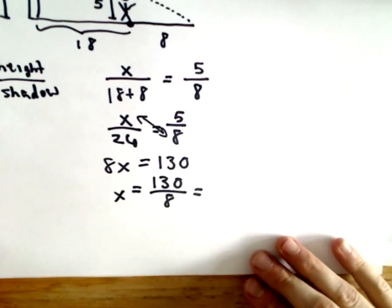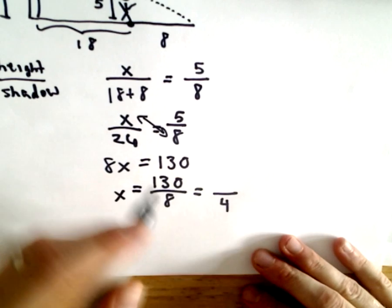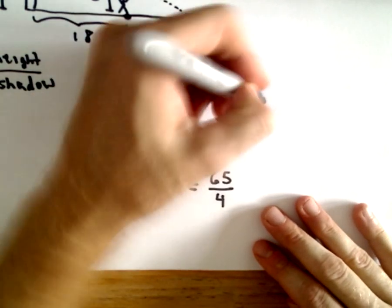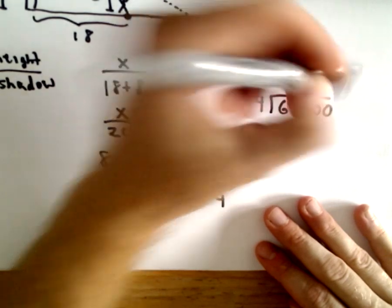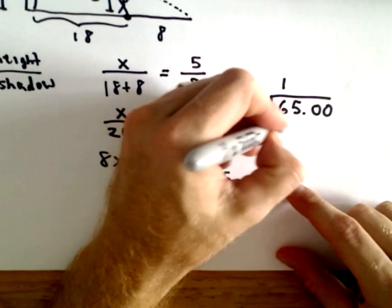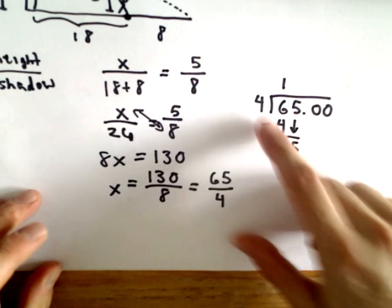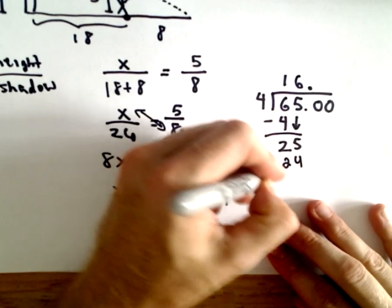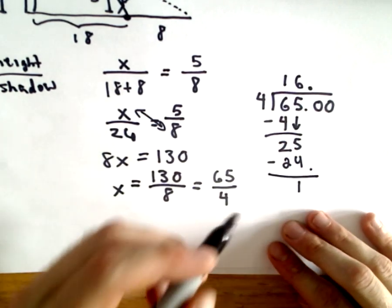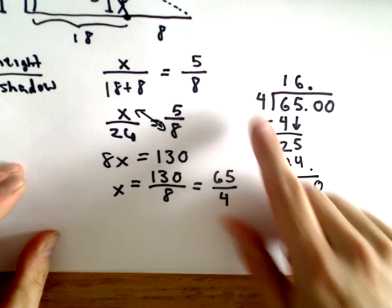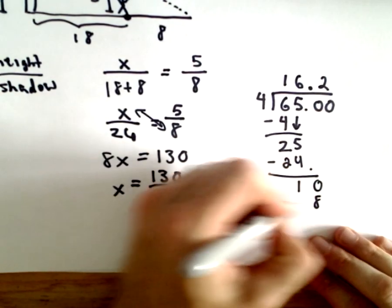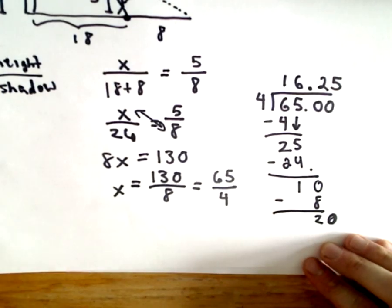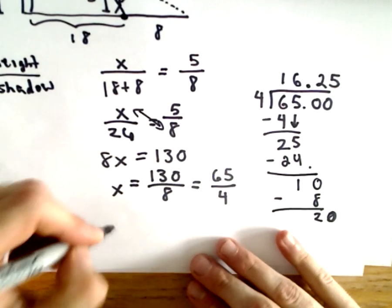If we divide both sides by 8, we'll get 130 over 8. Both of these are even, so let's reduce. 8 divided by 2 will be 4. 130 divided by 2, I think that'll be 65. Let's do some long division. 4 will go into 6 once. 1 times 4 is 4. If we subtract, that'll give us 2. Let's drop down the 5. 4 goes into 25 six times. 6 times 4 will be 24. 25 minus 24 will be 1. And let's drop down the 0. 4 will go into 10 twice. 2 times 4 is 8. If we subtract and drop down to 0, 4 goes into 20 five times. I'm getting the height of the pole to be 16.25 feet.